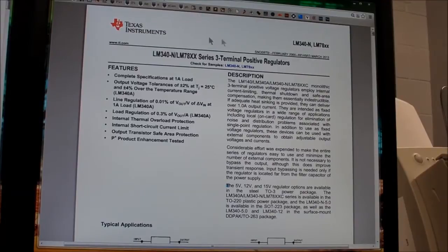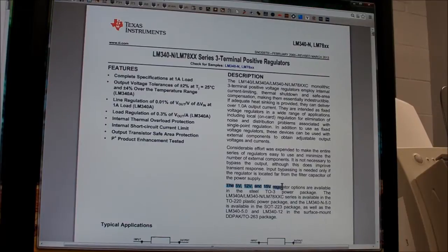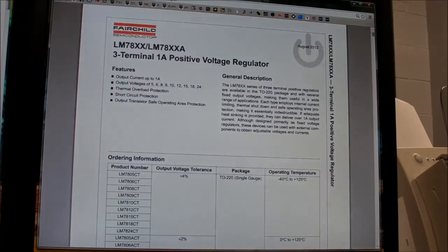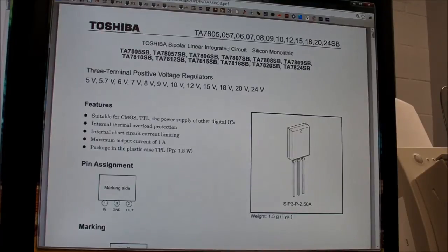Fairchild, however, has 7805, 6, 8, 9, 10, 12, 15, 18, and 24 - a much broader selection. This is the selection that I was familiar with.